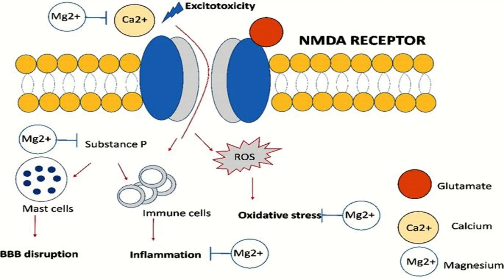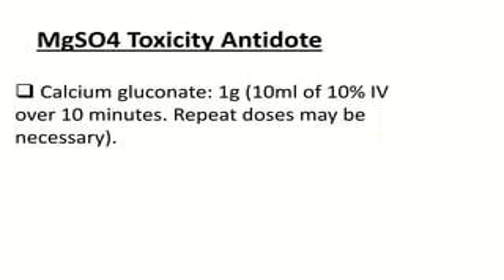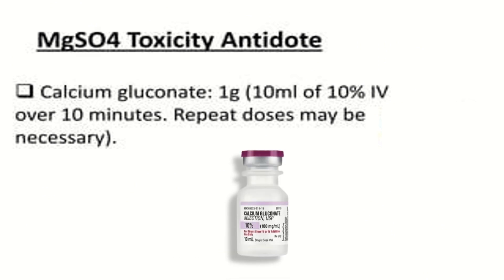What is the role of calcium gluconate in magnesium sulfate toxicity? Calcium gluconate antagonizes the toxic effects of magnesium — calcium and magnesium ions electronically oppose each other at their sites of action. Each ampoule of calcium gluconate contains 100 mg per mL, meaning 1000 mg per 10 mL. For toxicity, we give 1 g (10 mL of 10%) IV over 10 minutes, and a repeat dose may be necessary, with appropriate dilution.